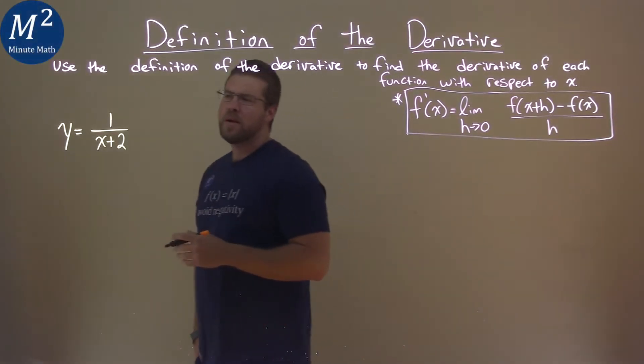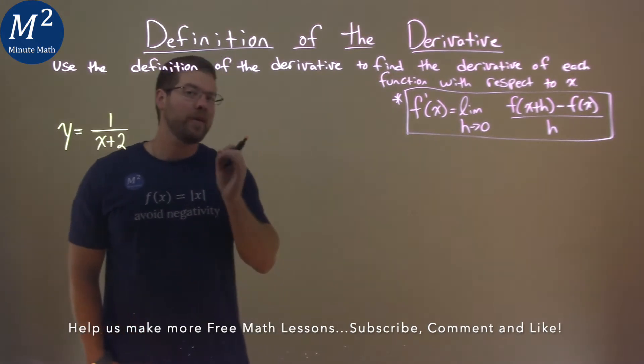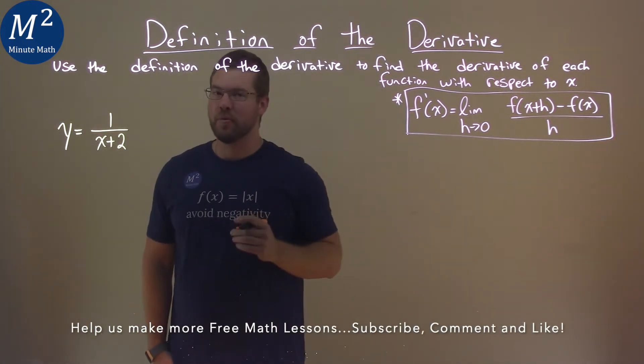We're given this problem right here, y equals 1 over x plus 2, and we need to find the derivative using the definition of the derivative.